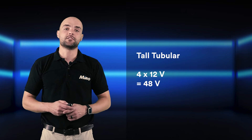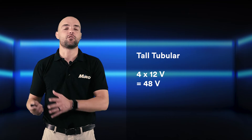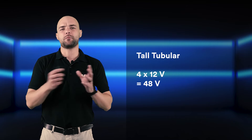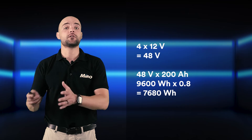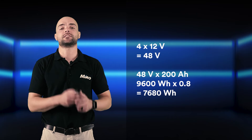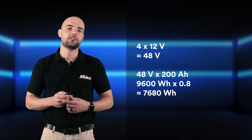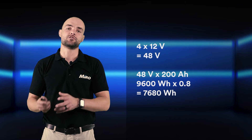For the tall tubular battery solution, the same applies — we connect the batteries in series to push the voltage up to 48 volts. Higher voltage means more pressure and we don't require thick gauge copper cables, as compared to parallel connections which have higher amperage. Again, we have four 12 volt 200 amp hour batteries connected in series, giving us a total capacity of 9600 watt hours, and at an 80% DoD, that gives us 7680 watt hours of usable capacity.